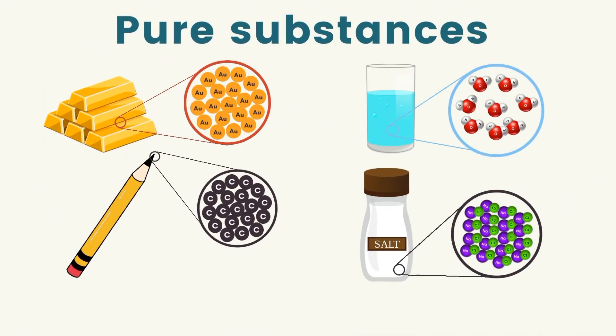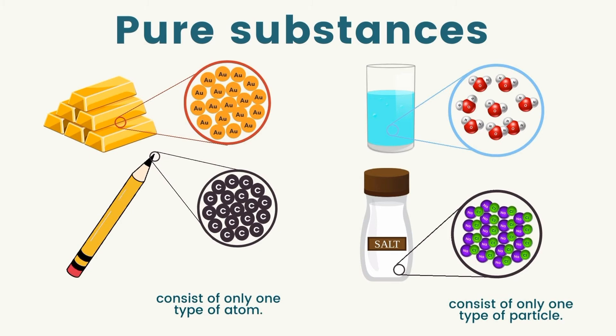Let us have a recap. Pure substances are substances that are made up of only one kind of atom or particle, and they can be classified into elements and compounds. Elements are the simplest form of matter, consisting of only one type of atom. Compounds are composed of two or more elements that are chemically bonded, and contain a single type of particle. In our examples, water only consists of H₂O, while table salt only consists of sodium chloride and nothing else.